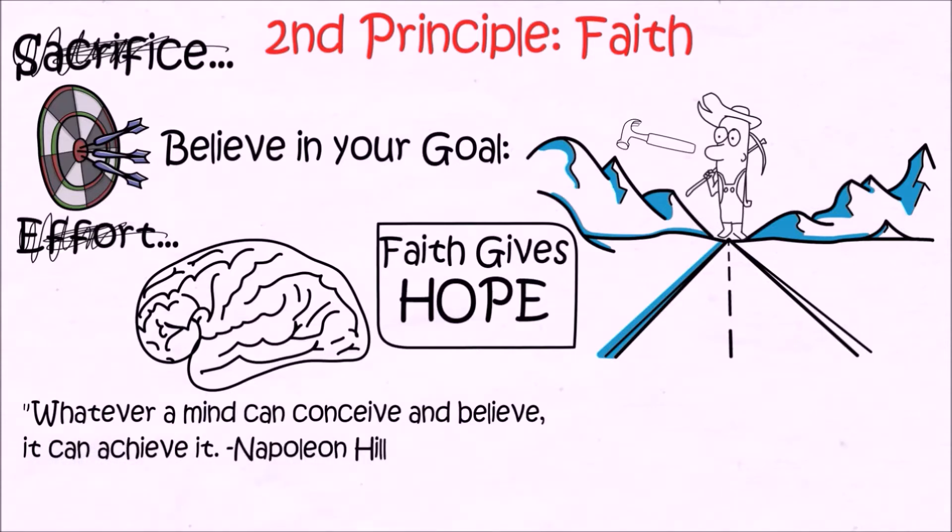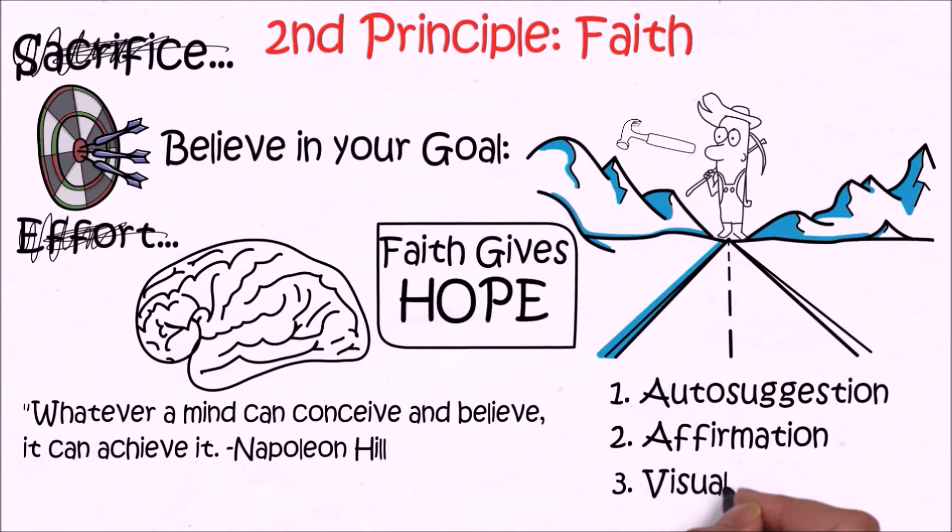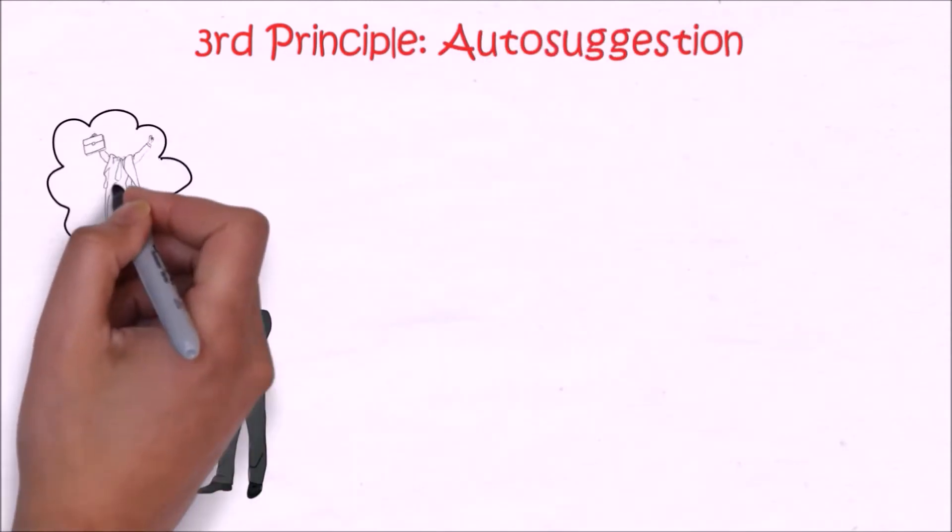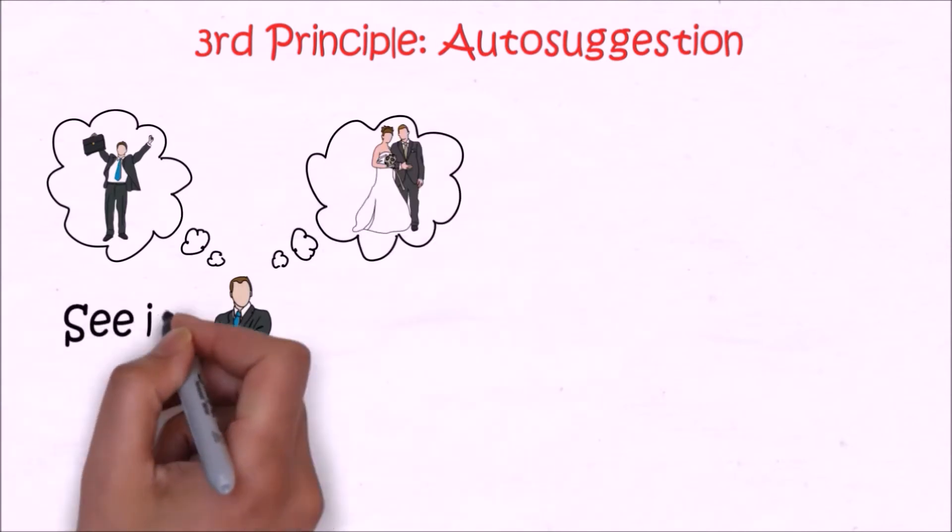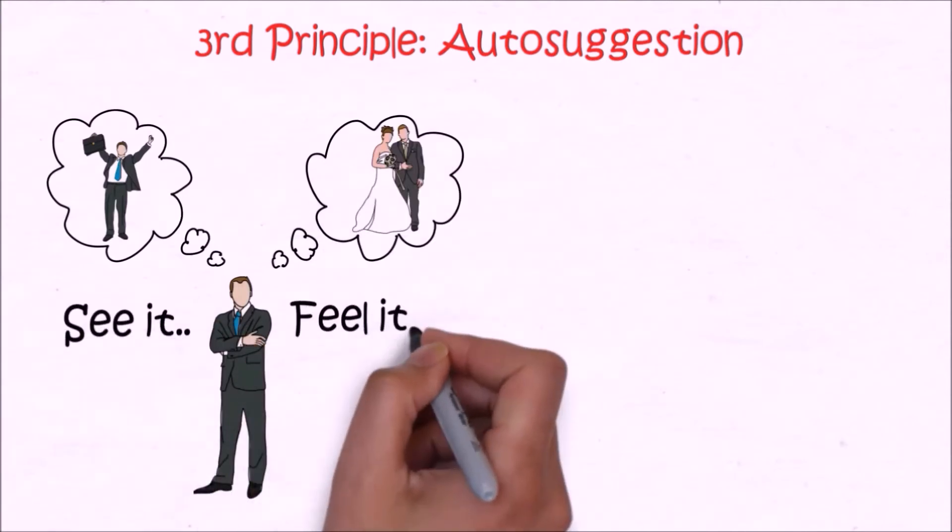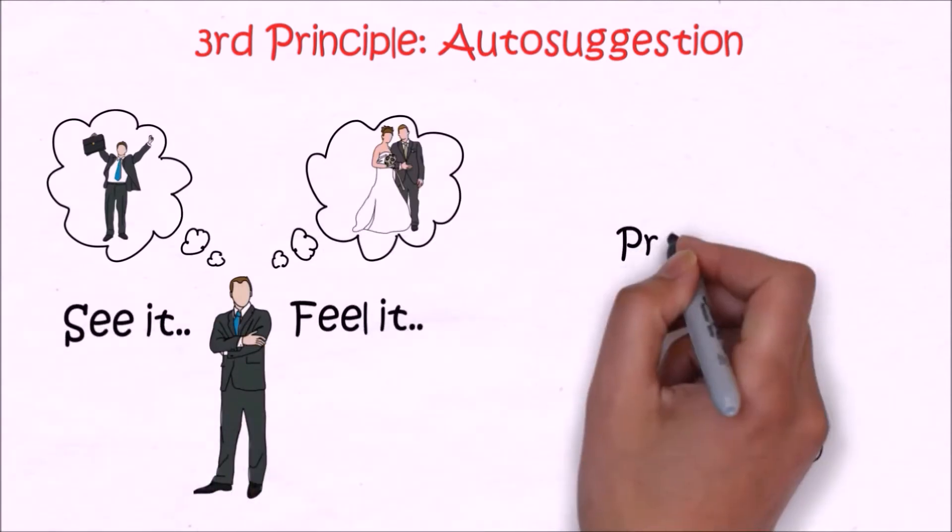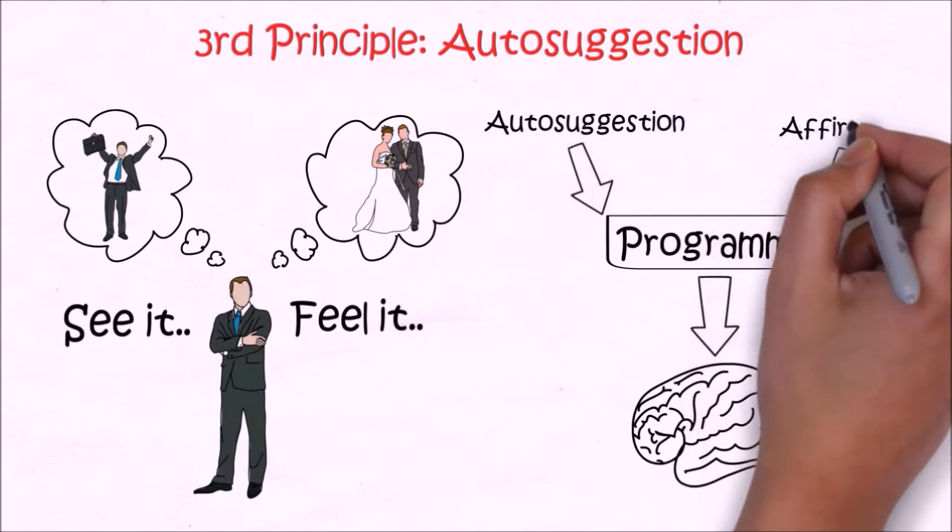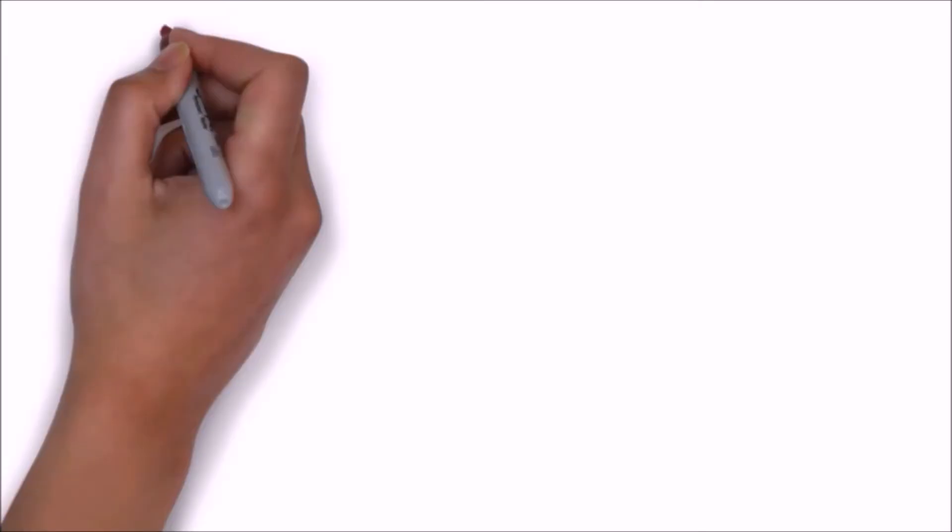He recommends use of auto-suggestion, affirmation, and visualization to develop and strengthen one's faith. The third principle is auto-suggestion. You need to constantly suggest to yourself that you will achieve your goal, see yourself already achieving your goal, and repeat your affirmation. We can program our subconscious mind to achieve what we want through auto-suggestion and affirmation.